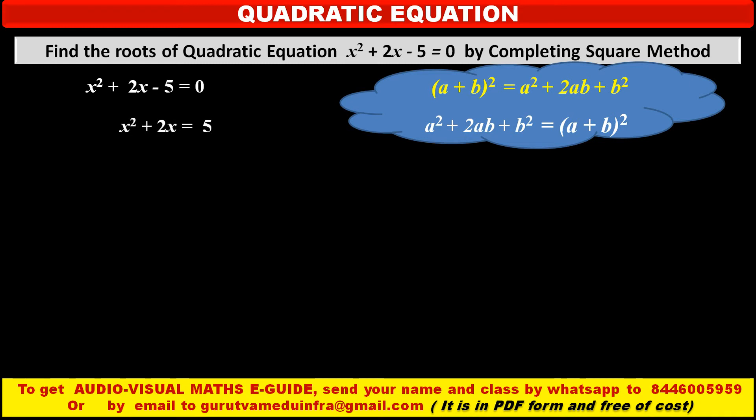Now to use this formula in this problem, first we have to shift constant term in the right hand side to make this process easy. Now we have to add both the sides square of half of the coefficient of x, means in this case that is (½ × 2)² which is equal to 1. Now we have to add this 1 at both the sides of this equation.